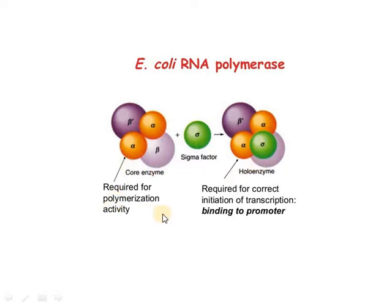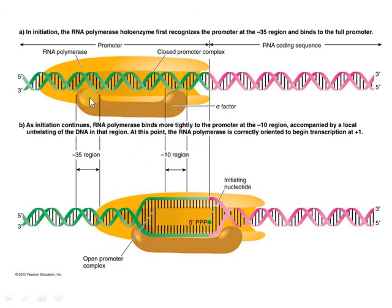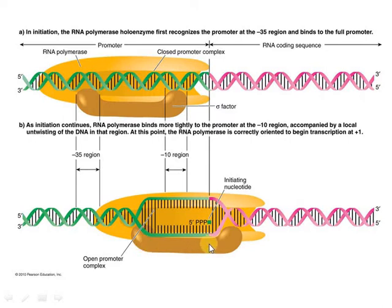Ek dafa jab binding to promoter ho jaati hai aur transcription ka process start ho jaata hai, phir is sigma factor ki zaroorat nahi hoti. Phir core enzyme bhi polymerization — yaani addition of new RNA nucleotides to the RNA strand — kar sakta hai. Yeh sigma factor pehle promoter ke saath aake attach hota hai. Jab yeh attach ho jaata hai, iske baad baaki RNA polymerase sub-units saath aake attach ho jaate hain. Sigma factor minus 35 region ke upar prokaryote mein attach ho raha hai, ek minus 10 pe. Phir yeh aage ki taraf move karte hain towards the gene, aur plus 1 point par pehle initiating nucleotide ko attach karte hain.